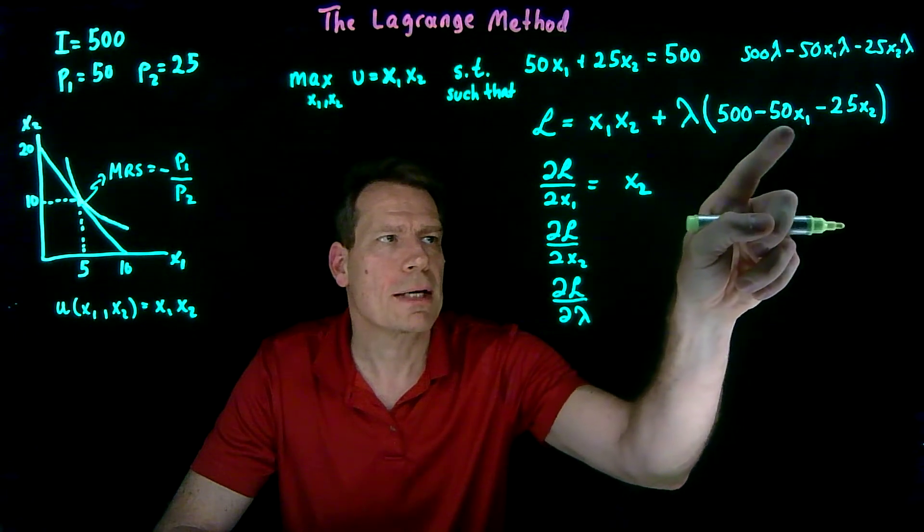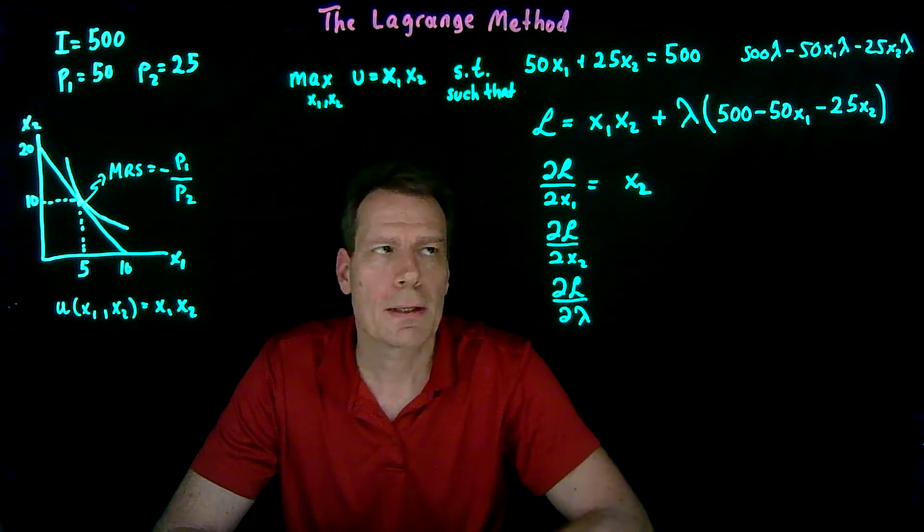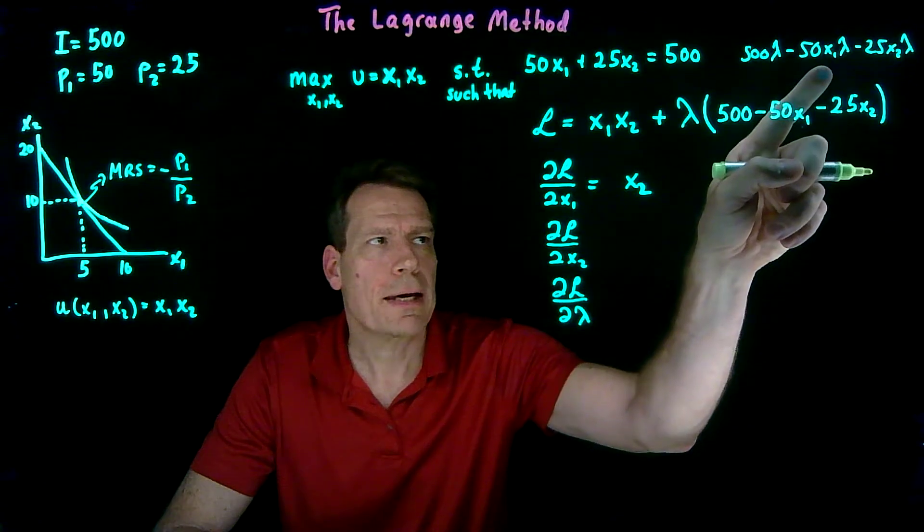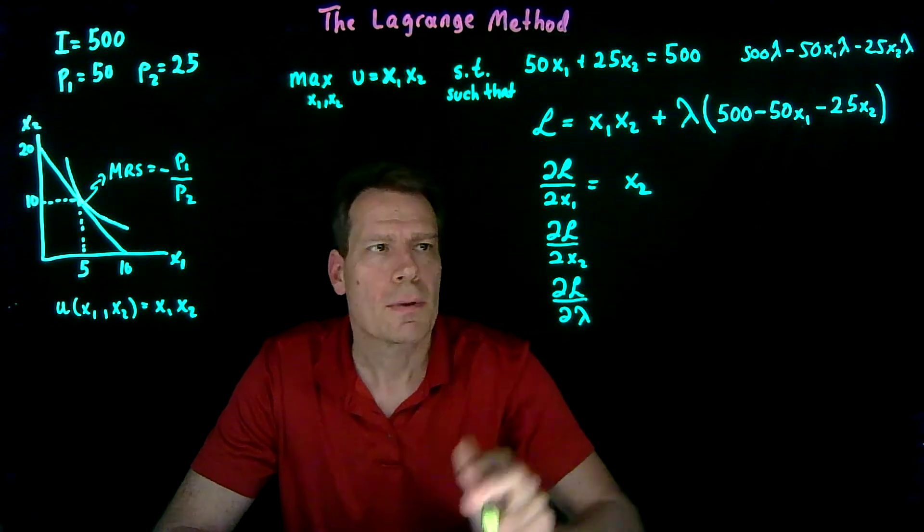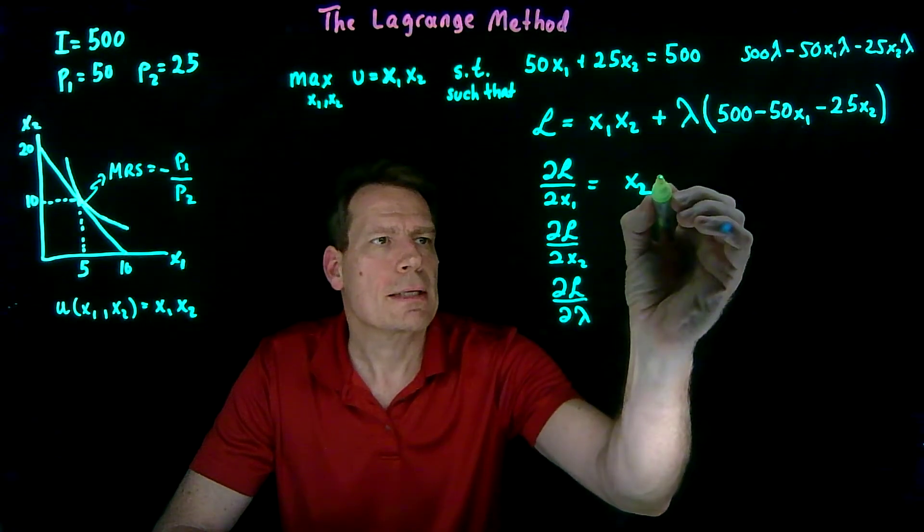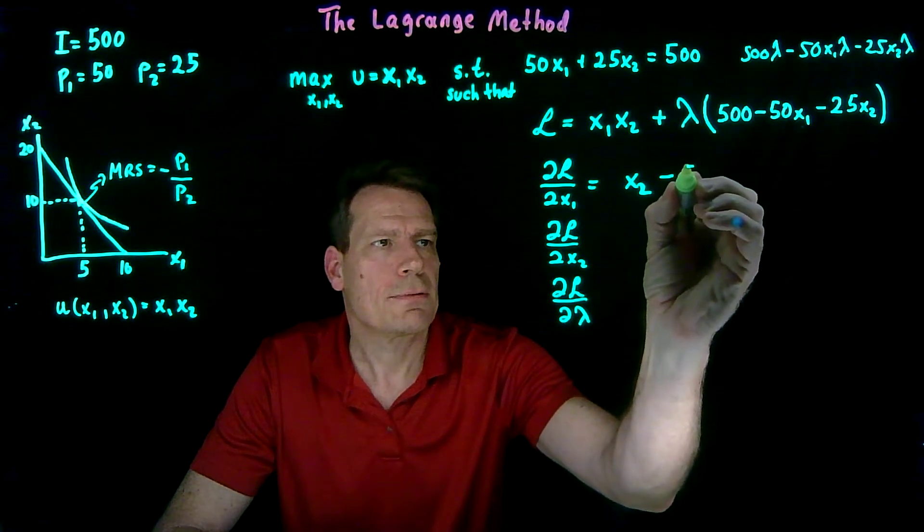So all we have to worry about is this middle term, the lambda times minus 50 x1. When we differentiate that with respect to x1, we just get 50 lambda. So we keep the minus sign, minus 50 lambda.